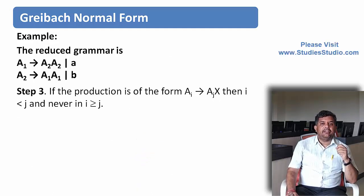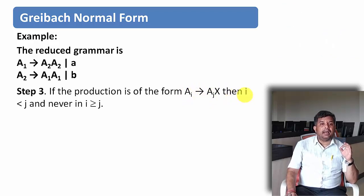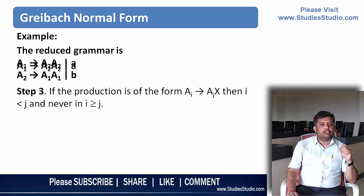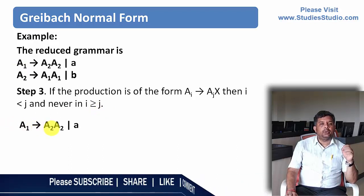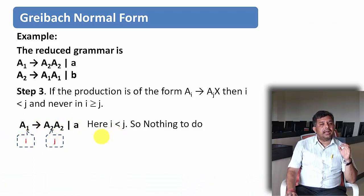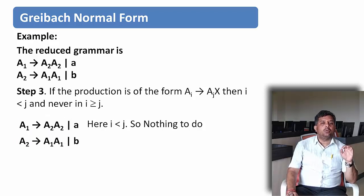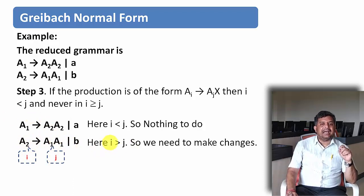Step 3: if a production is in the form Ai derives Aj X, then i must be less than j. Take the first production: A1 derives A2A2. Here i=1 and j=2, so i is less than j — we need not do anything, as it satisfies the condition. Now take the second production: A2 derives A1A1 or B. Here i=2 and j=1, so i is greater than j — we need to make some adjustment.